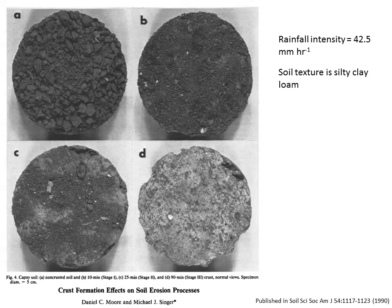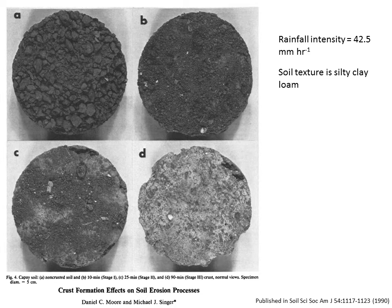These photos show what happens to a silty clay loam when it receives a rainfall intensity of 42.5 millimeters per hour — just under two inches per hour. Panel A shows the soil before rainfall, B shows it after 10 minutes, C after 25 minutes, and D after 90 minutes. You can see the soil gets completely beaten down through raindrop impact — an example of physical dispersion — with dislodged particles filling in the pore space.